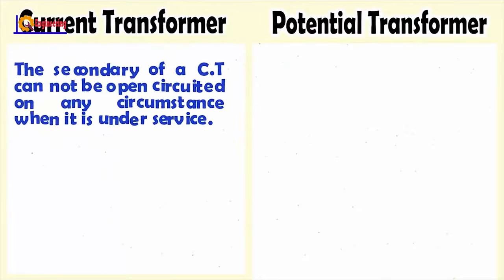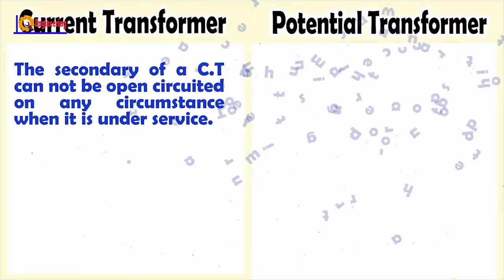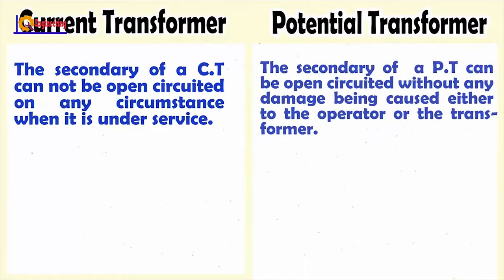The secondary of a current transformer cannot be open-circuited when it is under service. The secondary of a potential transformer can be open-circuited without any damage being caused either to the operator or the transformer.